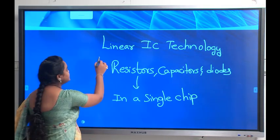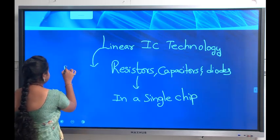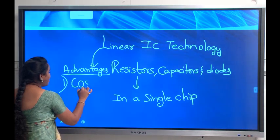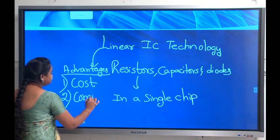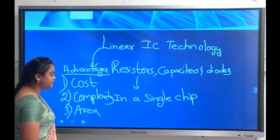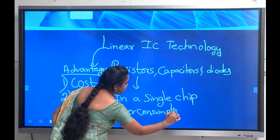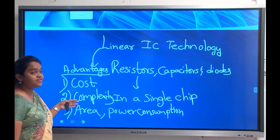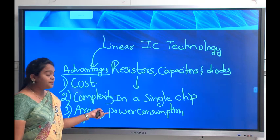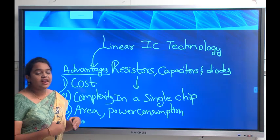By using Linear IC technology, there are many advantages. The advantages are: reduction of cost, reduction of complexity, area of occupation is also reduced, and power consumption is also reduced. Linear IC technology means fabrication of all electronic components in a single chip, which reduces complexity, area, and power consumption.